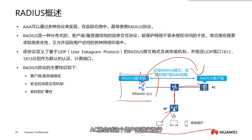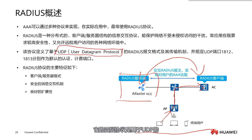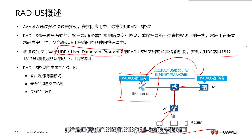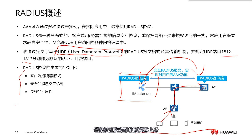If the user is eligible, the AC will grant access and then the user can access the internet normally. This protocol is based on UDP at Layer 4, and it uses ports 1812 and 1813 for authentication and accounting. This RADIUS protocol is now used by most operators, including their broadband services.